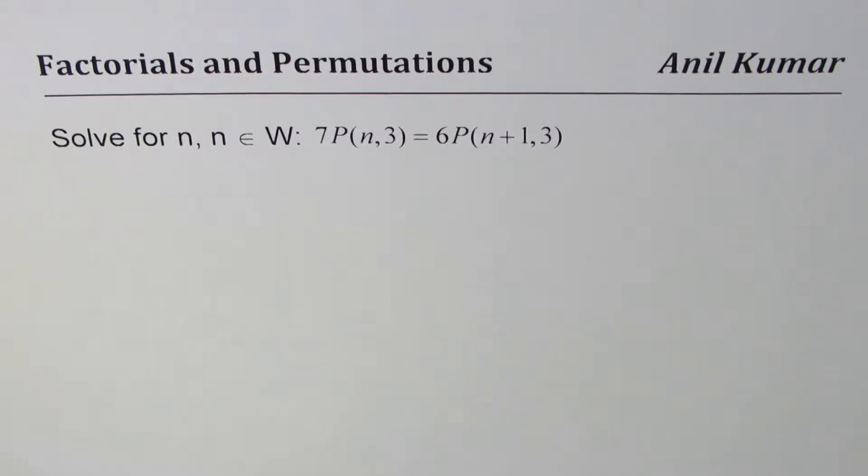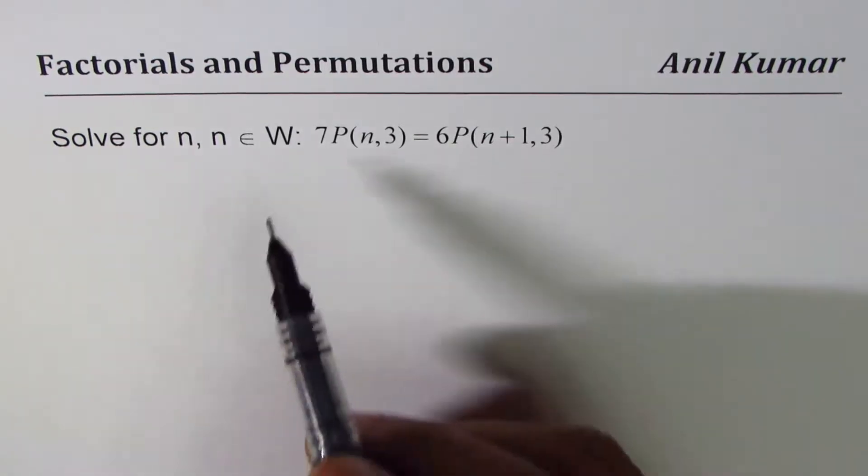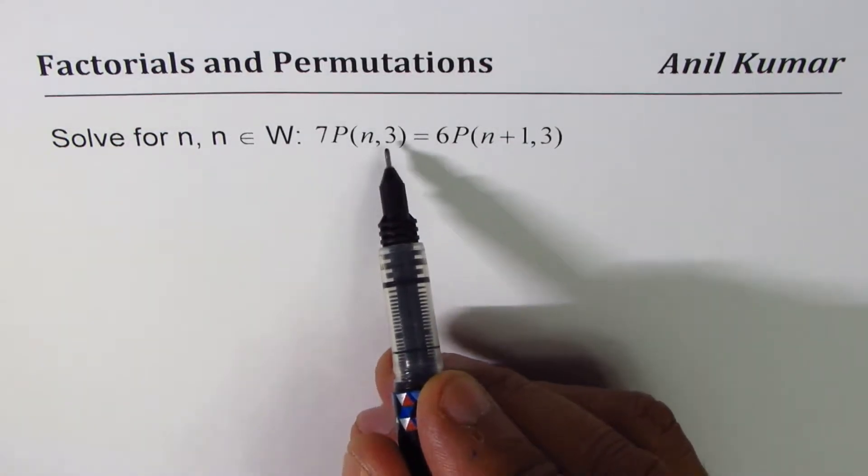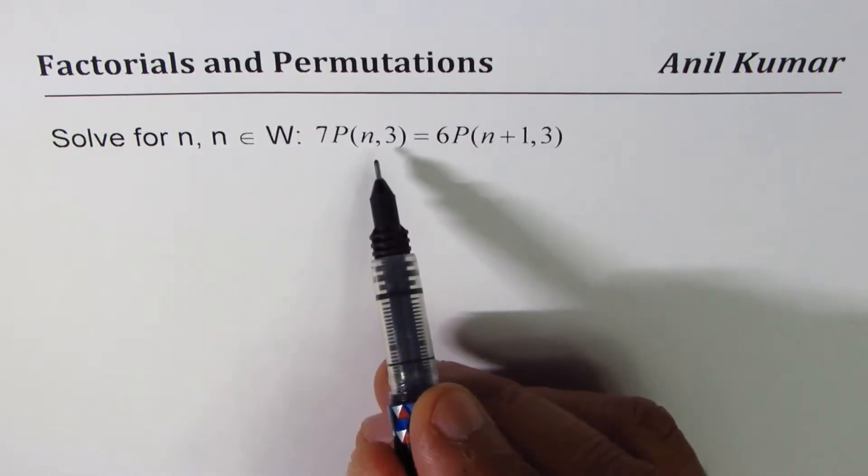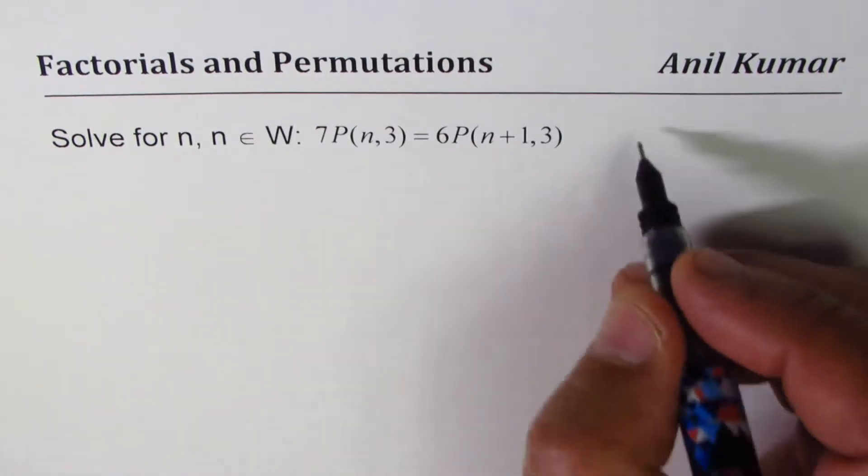I'm Anil Kumar and will further explore factorials and permutations. The question here is solve for n where n is a whole number: 7P(n,3) equals 6P(n+1,3). We need to find the value of n.